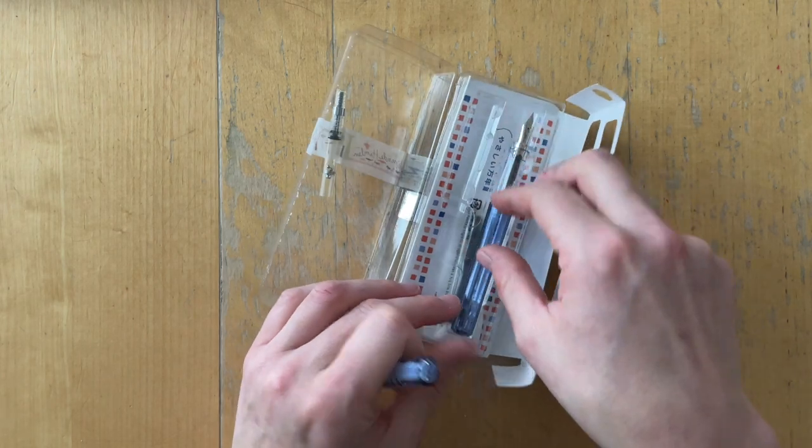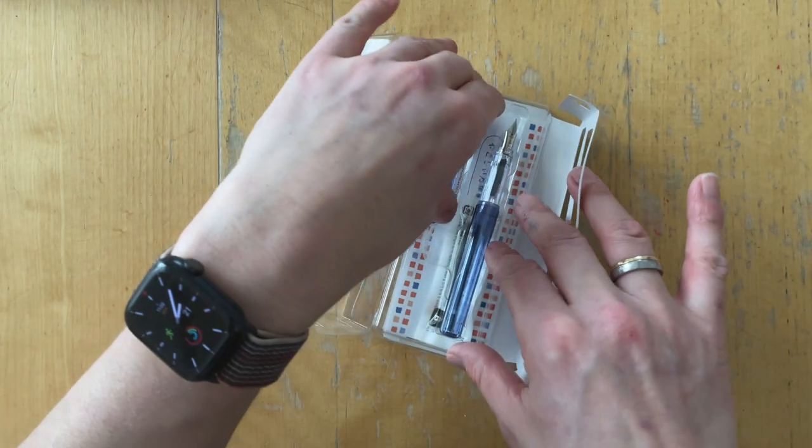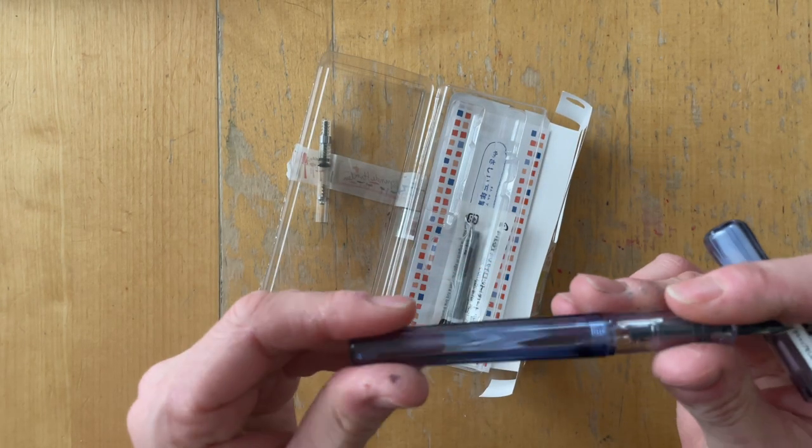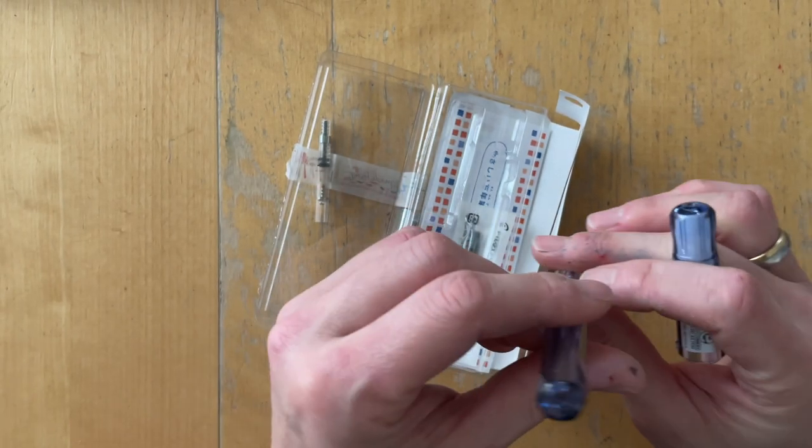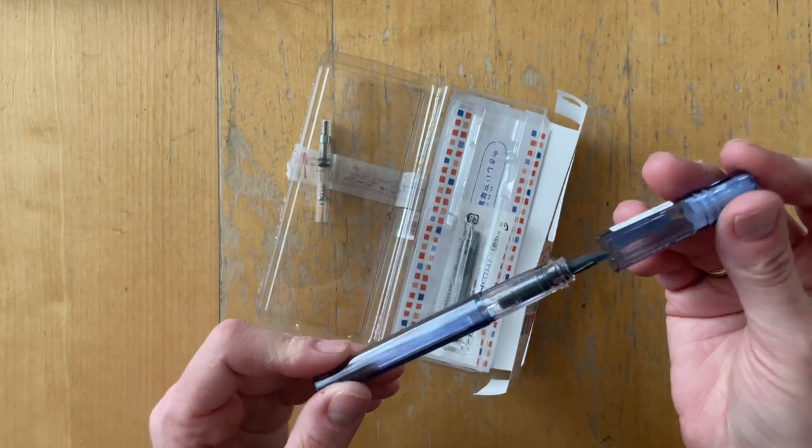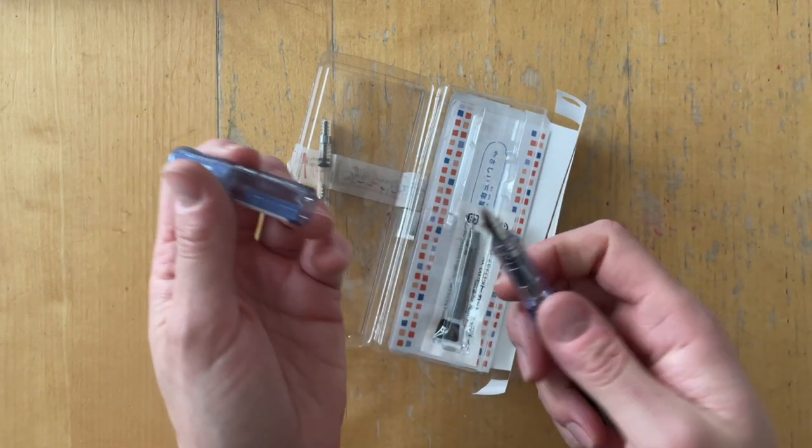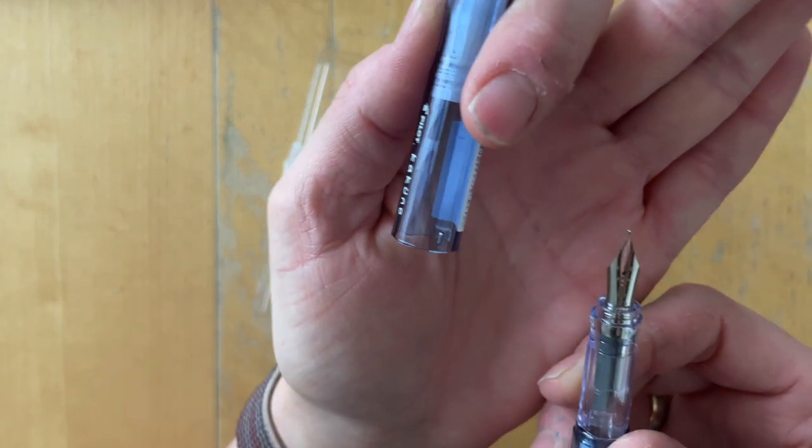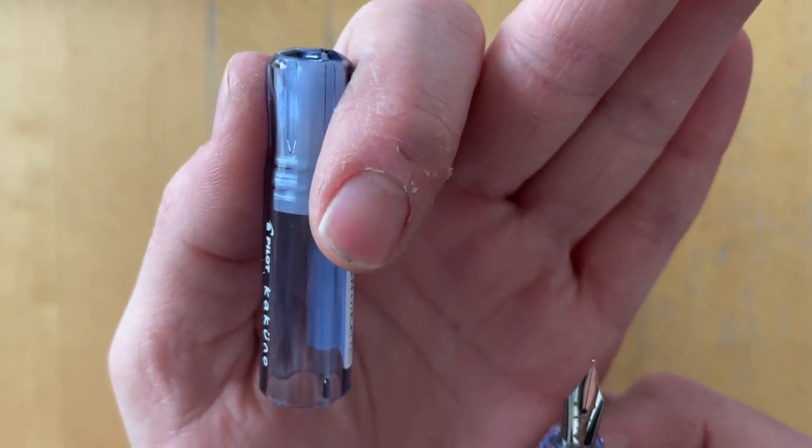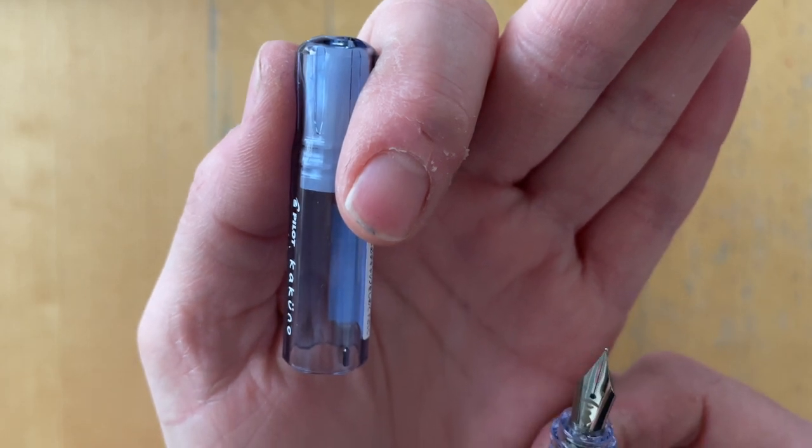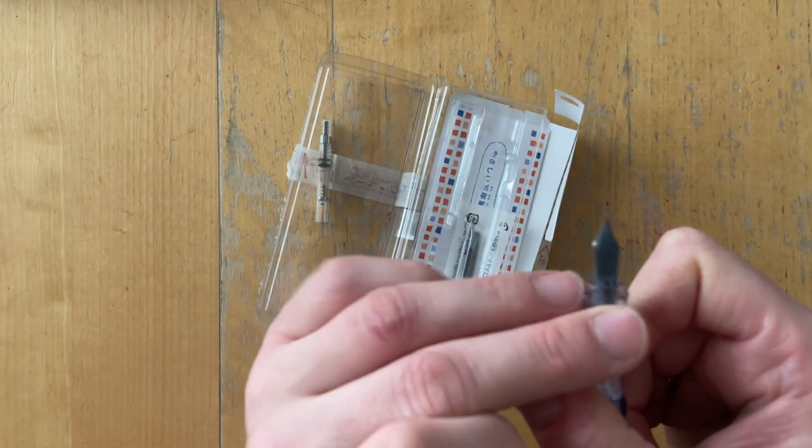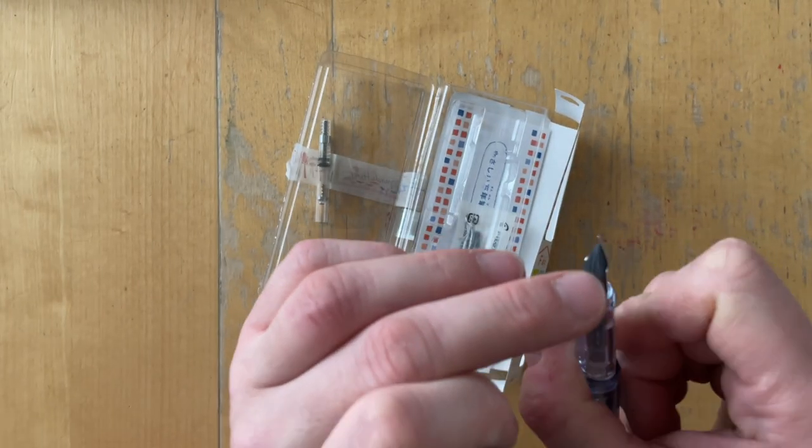It comes in this blister packaging. It is a clear, transparent, translucent body. It's not transparent because it's translucent blue. It has some facets right here and the cap clips on, it's not a screw cap. The nib is beautiful. It is a dad with a tie and a mustache and the nib is fine.